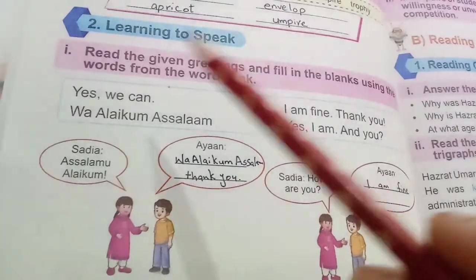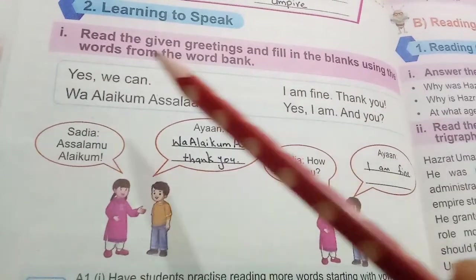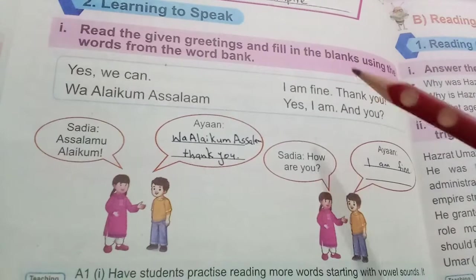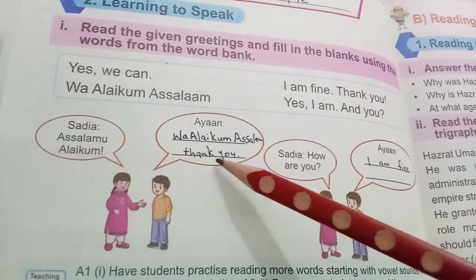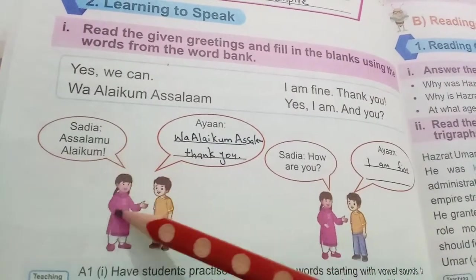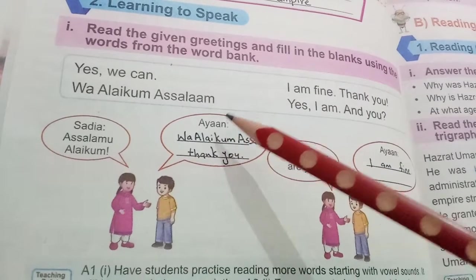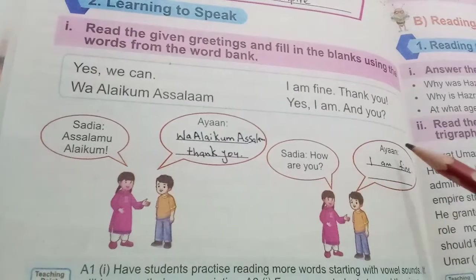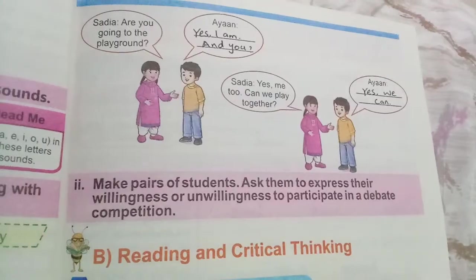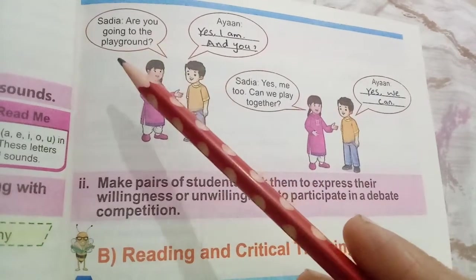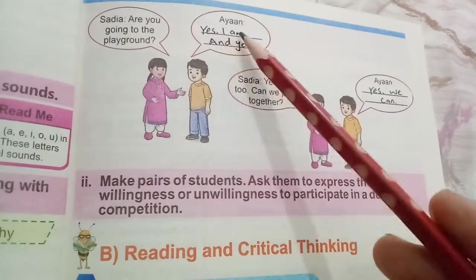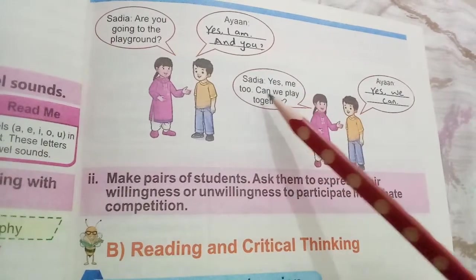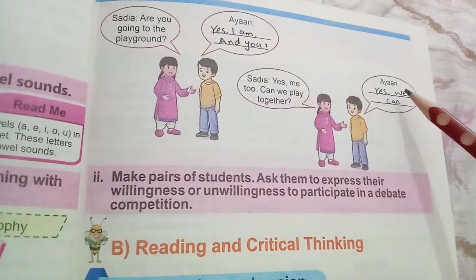Read the given greetings and fill in the blanks using words from the word bank. Sadia: Assalamu Alaikum. Ayaan: Wa Alaikum Assalam. Thank you Sadia. How are you? Ayaan: I am fine. Sadia: Are you going to the playground? Ayaan: Yes I am, and you? Sadia: Yes, me too. Can we play together? Ayaan: Yes we can.